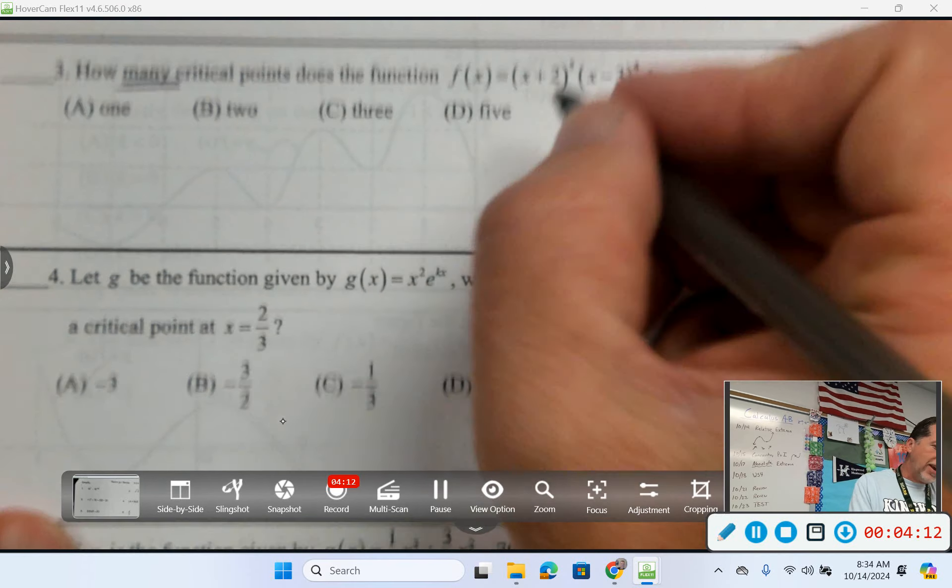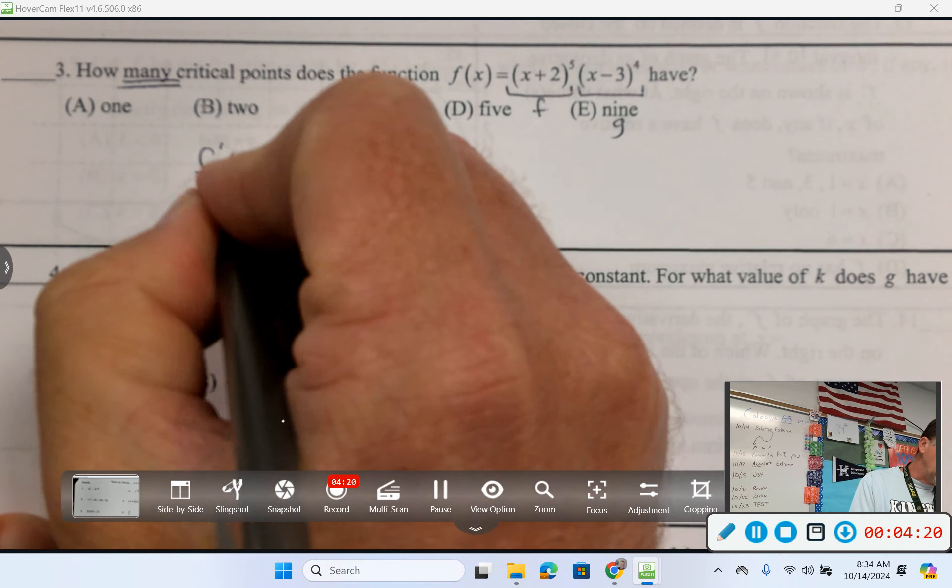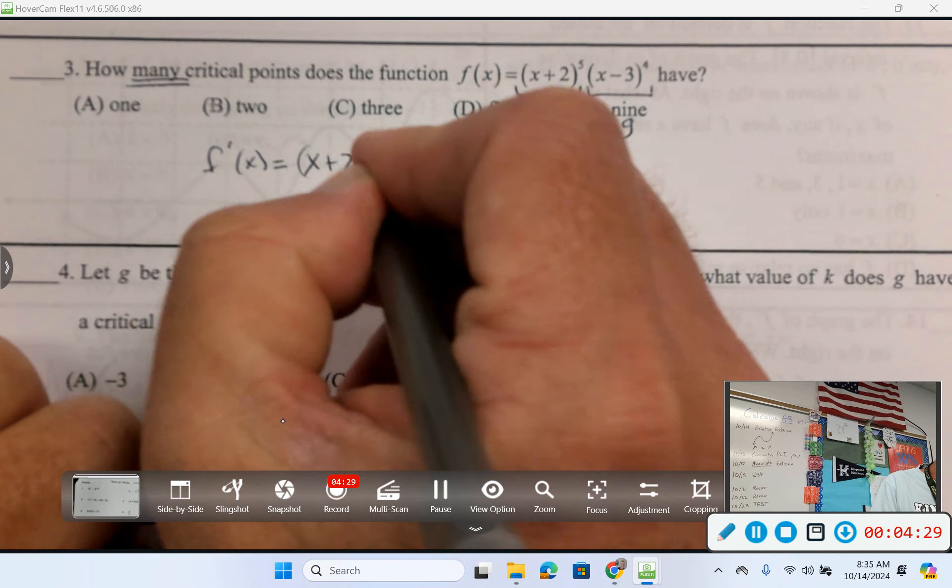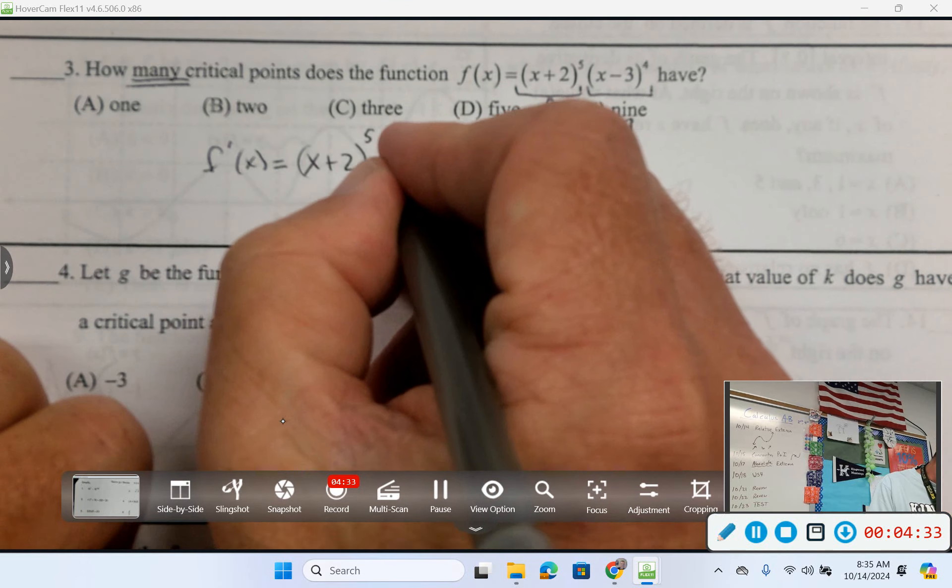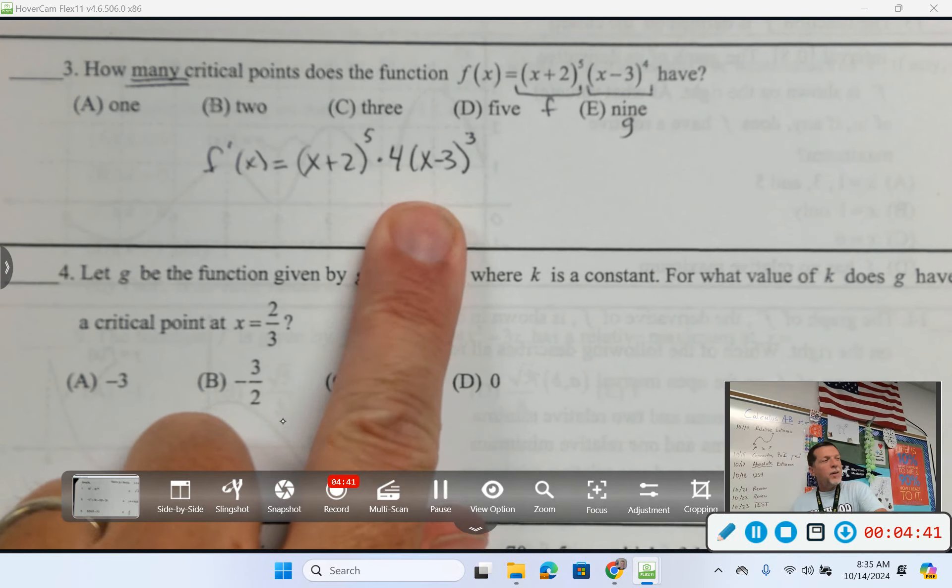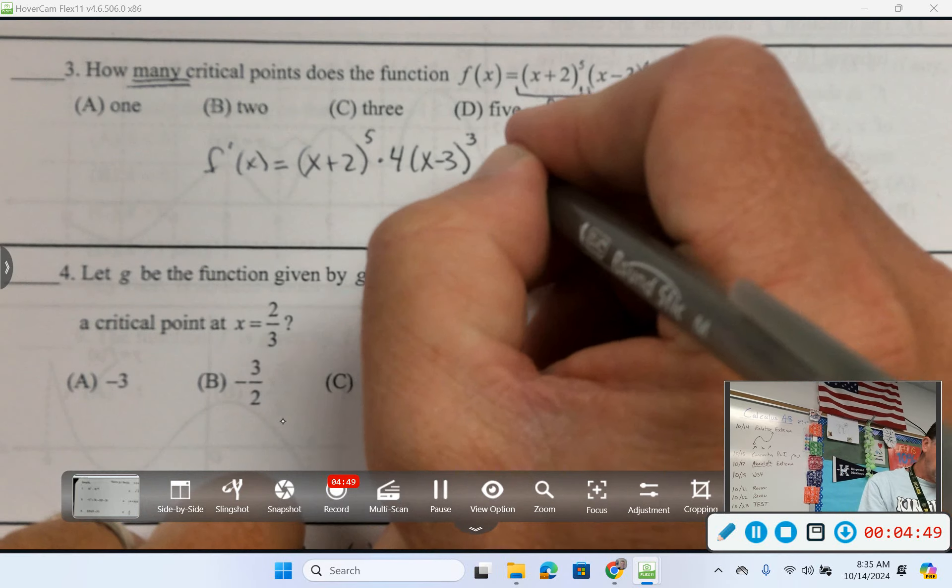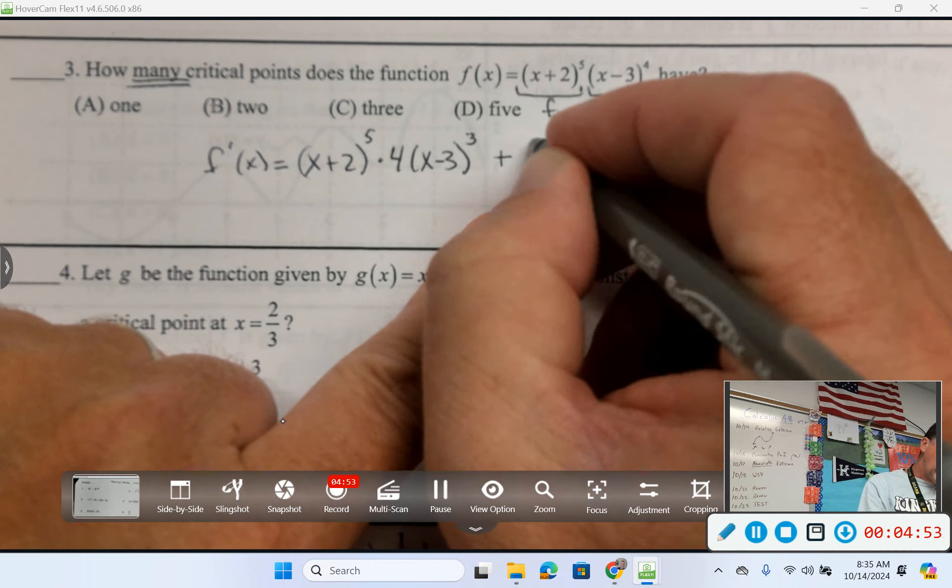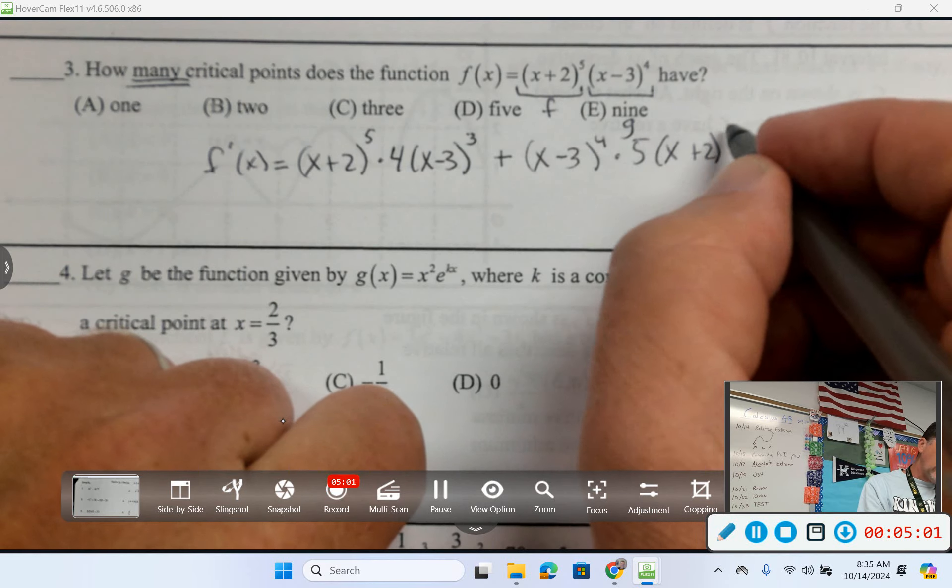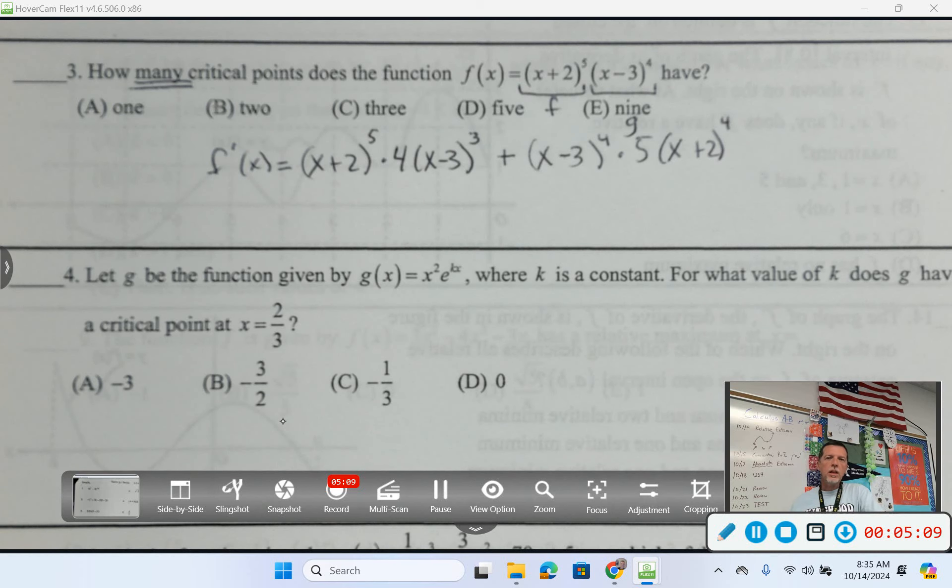And that's terrible, because now I've got to take a derivative of this thing. I'm thinking product rule here. So first times derivative of the second would be x plus 2 to the fifth. Derivative of the second would be 4 times x minus 3 cubed. I guess I should think about the chain rule, but the derivative of x minus 3 would just be 1, so that doesn't really add anything. Plus the other way around, so the second, x minus 3 to the fourth, times the derivative of the first, 5 times x plus 2 to the fourth, times 1 if we want to be really specific about the chain rule.